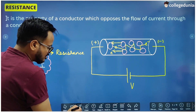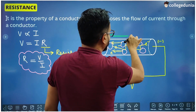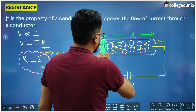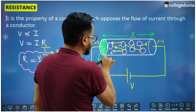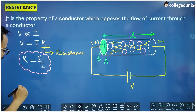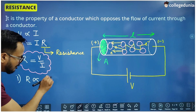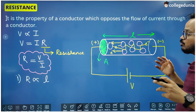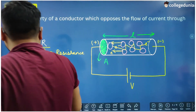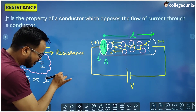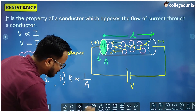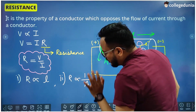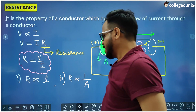Suppose the length of the conductor is L and the area of cross-section is A. Resistance is directly proportional to the length L — the longer the conductor, the more ions are present, so there is more hindrance for electrons. Second, resistance is inversely proportional to the area of cross-section A — if the wire is thicker, its area is more and its resistance is less.